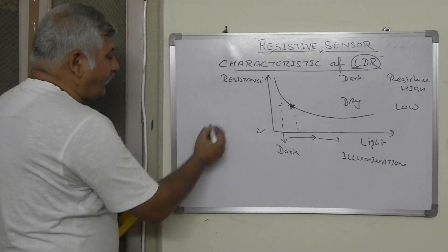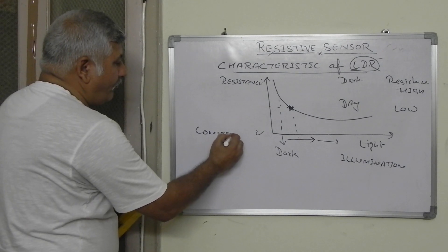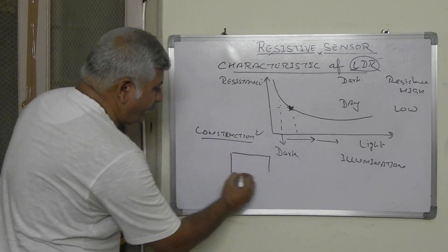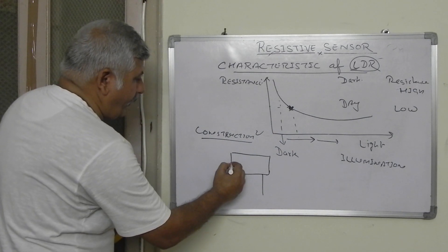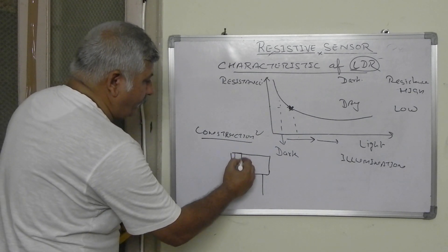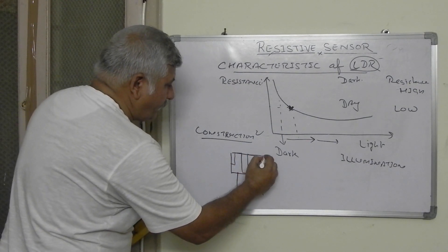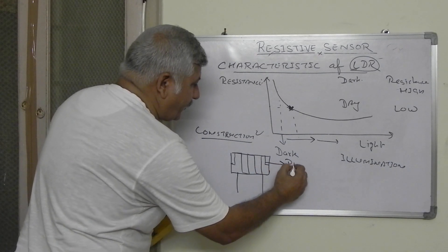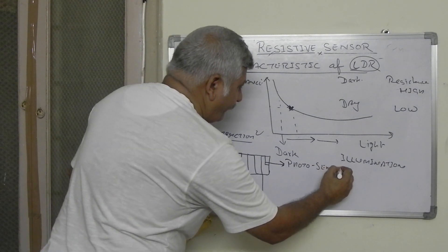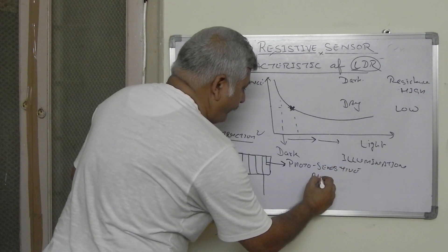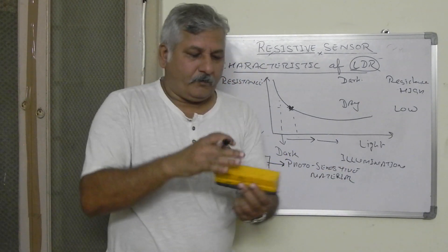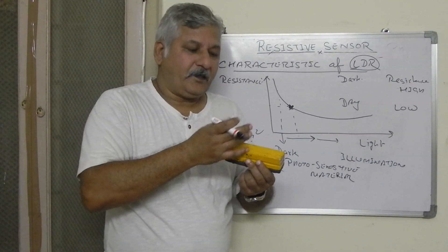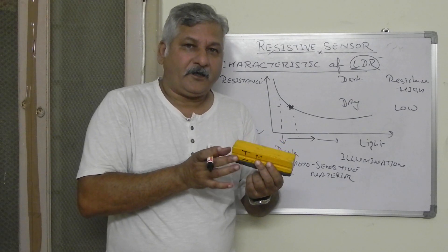Looking at the construction of the LDR: it is a two-terminal device, and you can find strips over this device. At the top, the photosensitive material is there. If that material is exposed to light, then the resistance of this LDR will decrease.